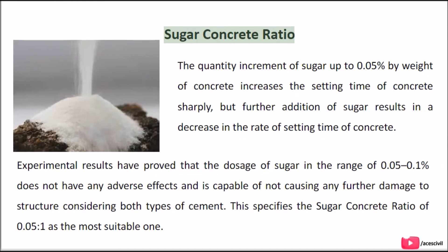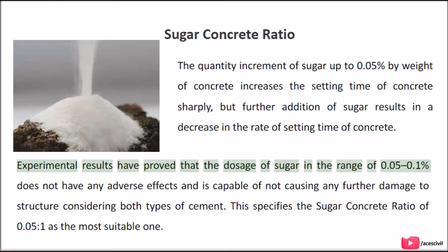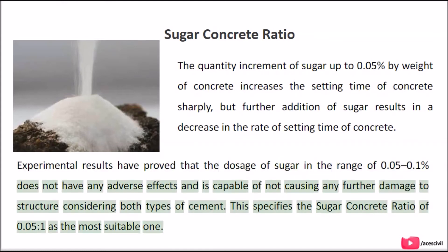Sugar-concrete ratio: the quantity increment of sugar up to 0.05% by weight of concrete increases the setting time of concrete sharply, but further addition of sugar results in a decrease in the rate of setting time. Experimental results have proved that the dosage of sugar in the range of 0.050% does not have any adverse effects and is capable of not causing any further damage to the structure, considering both types of cement. This specifies the sugar-concrete ratio of 0.05:1 as the most suitable one.